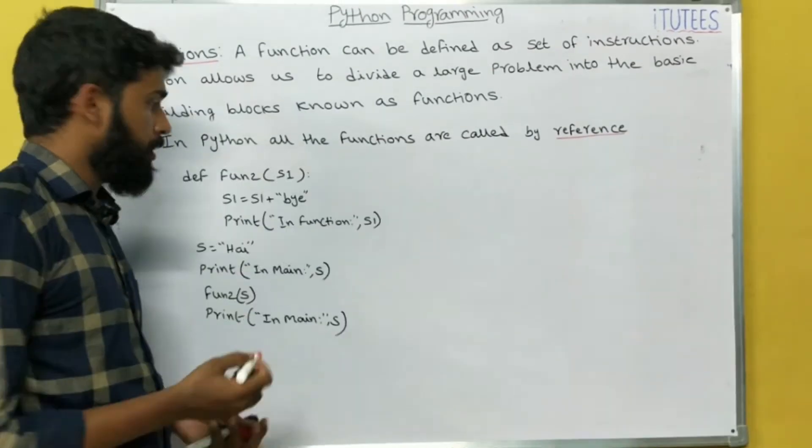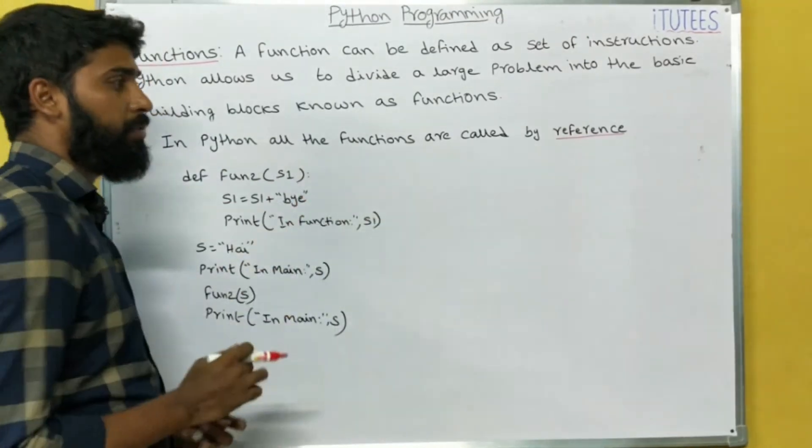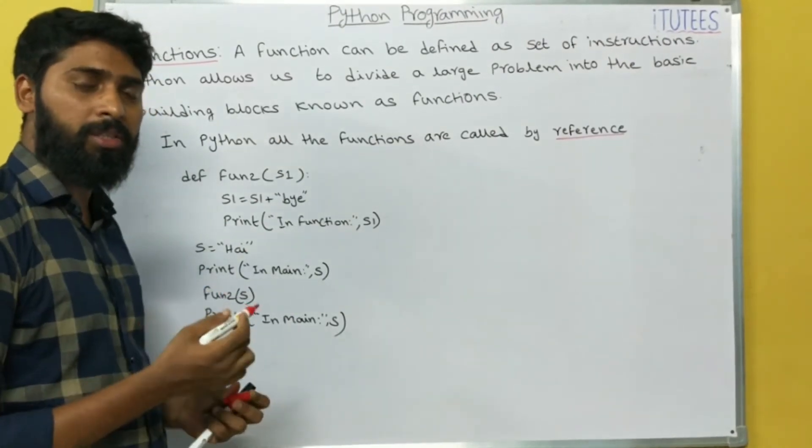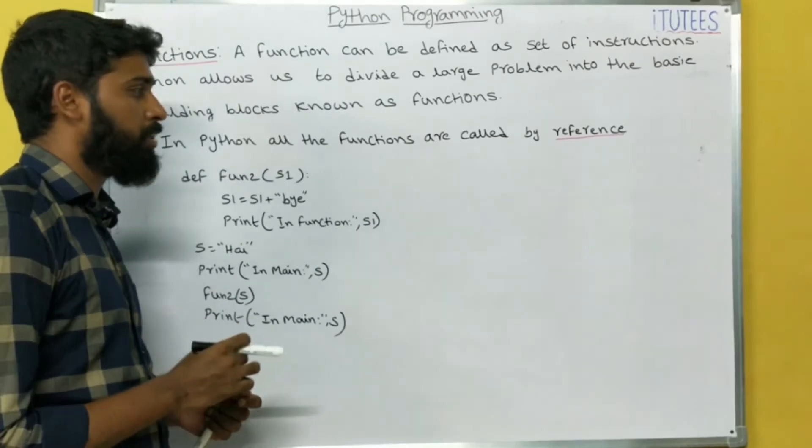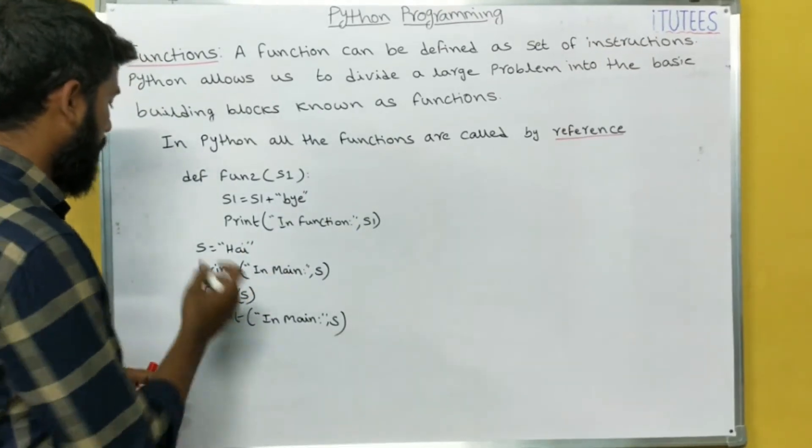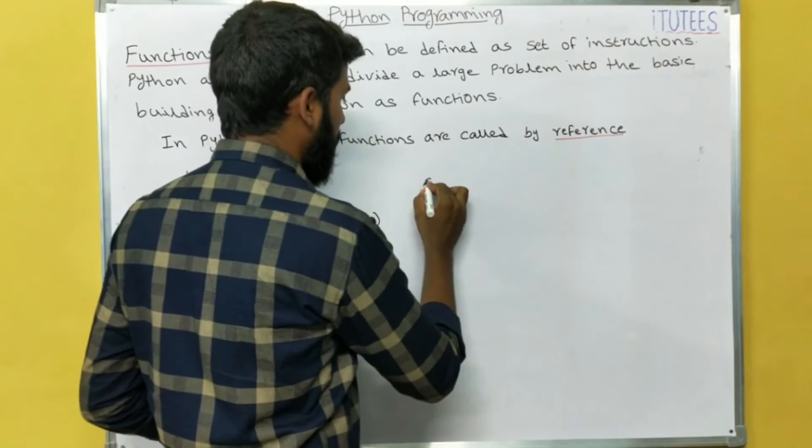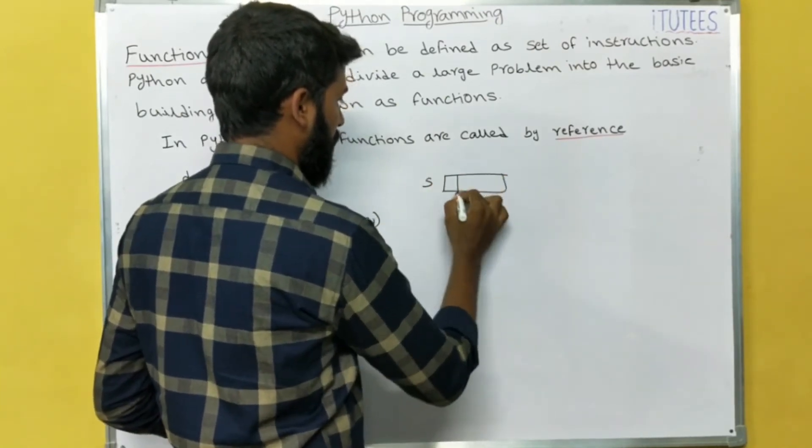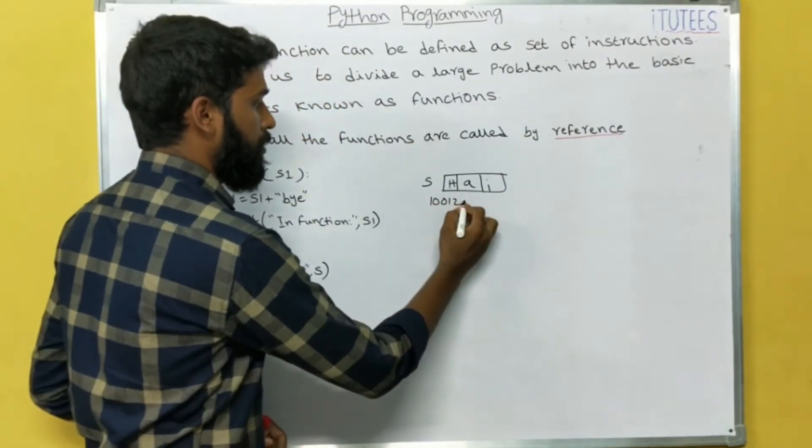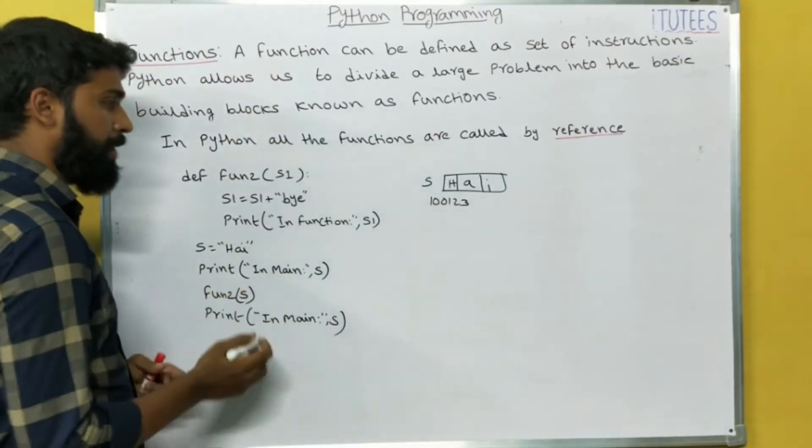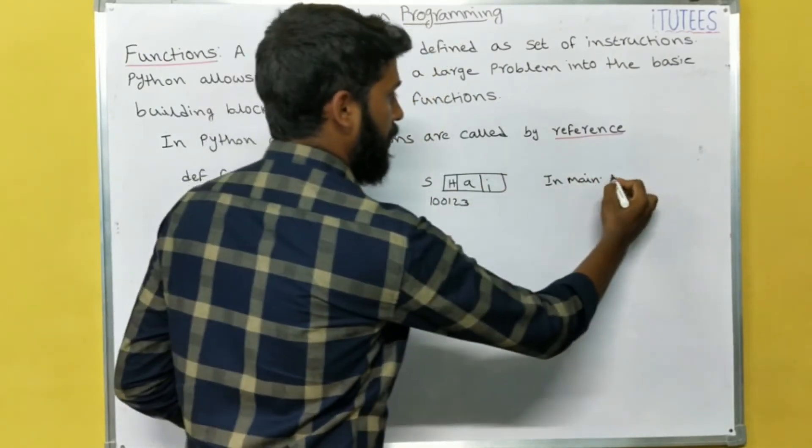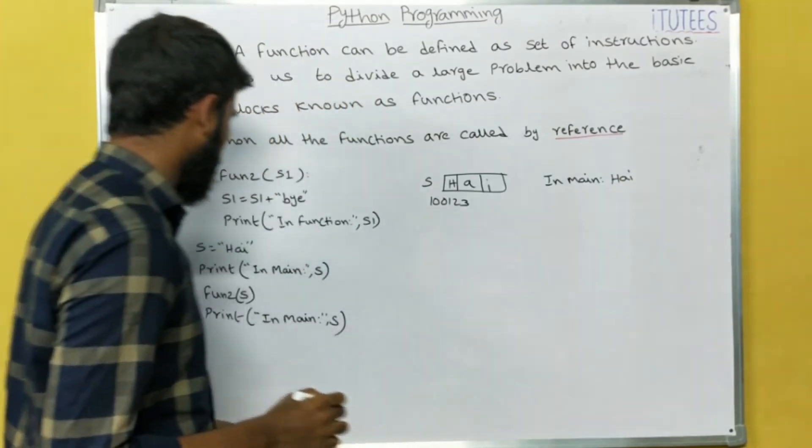Now we can see another example, the same program. Now we are changing the data type. So how the functions are called in Python, the functions are called by reference. In many interviews they are asking this question. Here I am taking S equals to high. It has some object, for example 100123. In main S, it prints in main, what is the S? H, A, I. After that the function call is occurred.